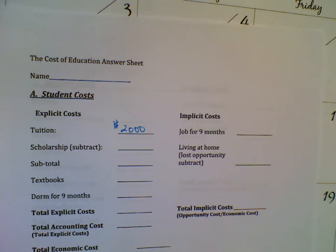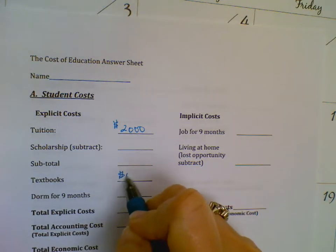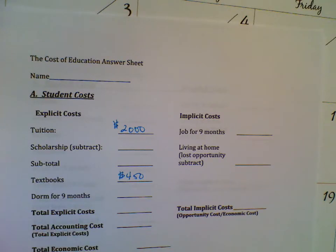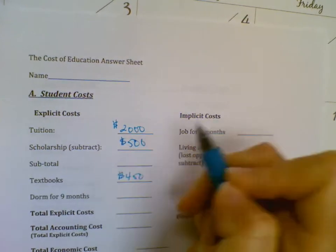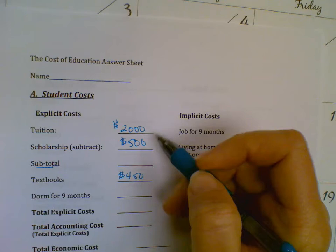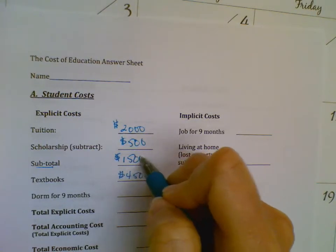Item B is textbooks and school supplies — that is an explicit cost an accountant would add in. Item C covers faculty and administrative salaries and other university expenses budgeted by the Board of Trustees for funds provided by the state legislature — we'll come back to that. Item D is contributions from alumni and private foundations. Item E relates to work. Item F is where we get to the scholarship: you've received a $500 a year scholarship from the Board of Trustees, so we put that $500 scholarship in.